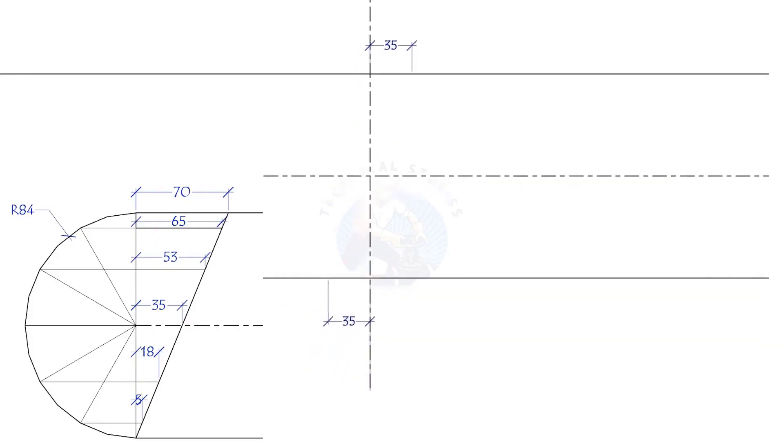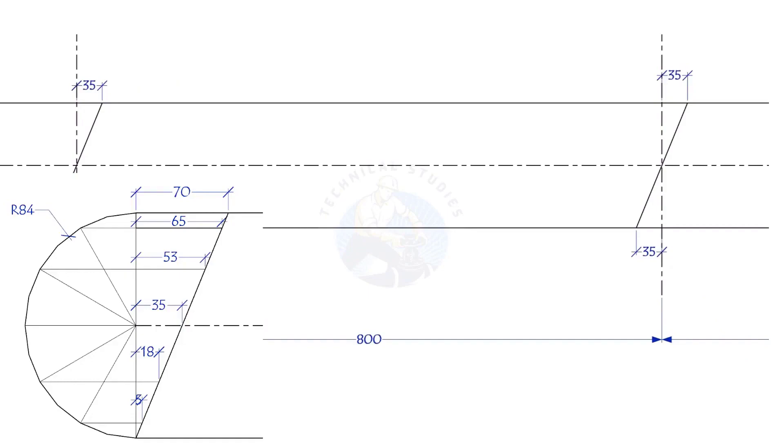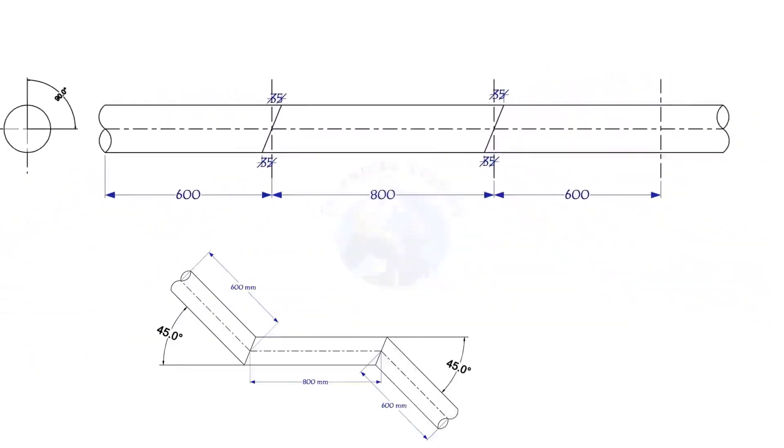Or, divide the pipe to 12 parts, draw a layout as shown, and mark. Repeat the process. The direction of the marking shall be the same.